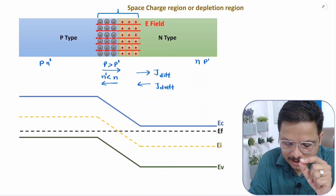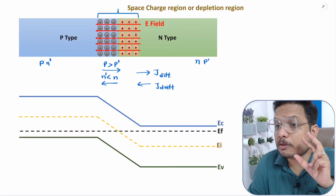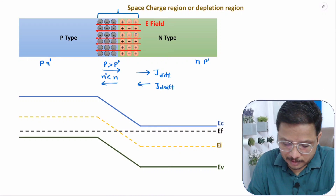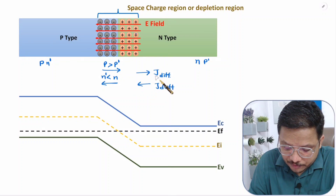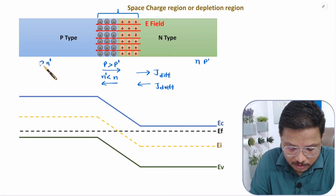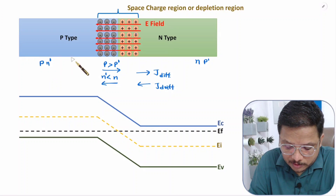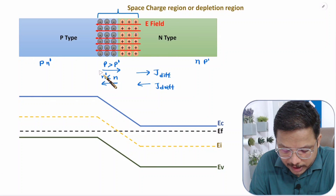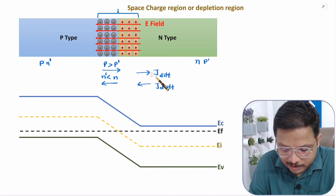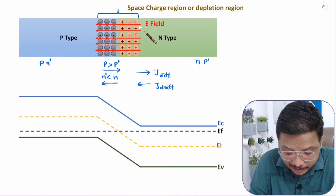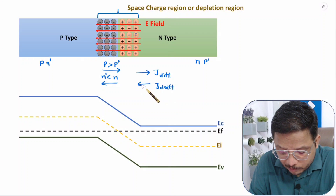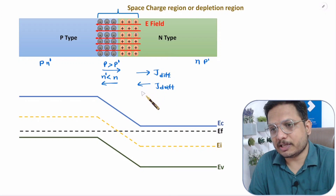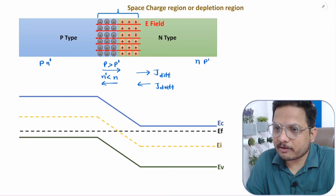We are talking about this P-N junction under no bias condition. There is no flow of current. Diffusion current is happening because of concentration gradient — with P-type, holes concentration is more compared to N-type, and with N-type, electron concentration is more compared to P-type. So holes move one direction and electrons move the other, making diffusion current flow in one direction. But due to electric field, drift current flows in the opposite direction. Both are equal so they cancel, and there is no net flow of current.